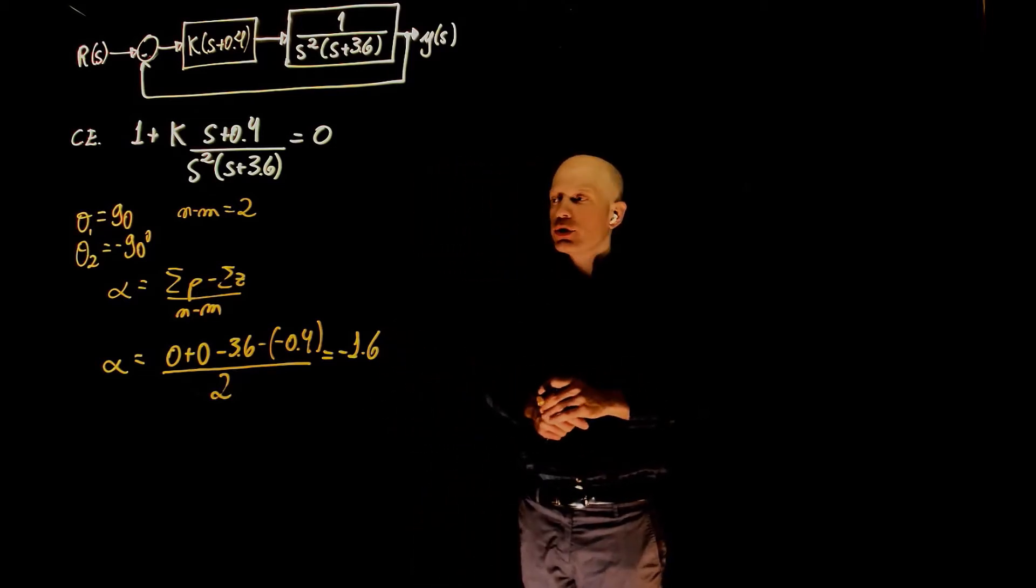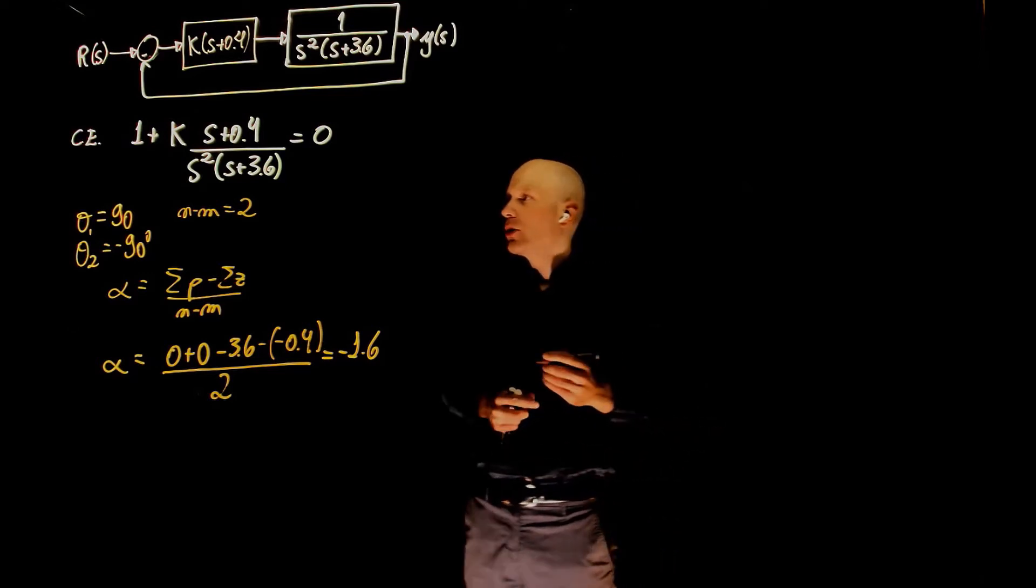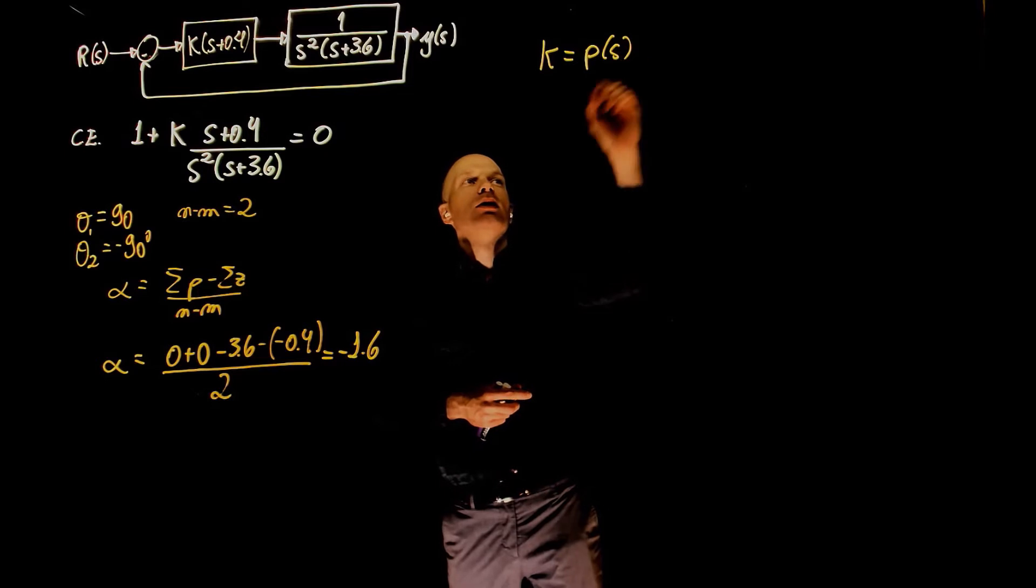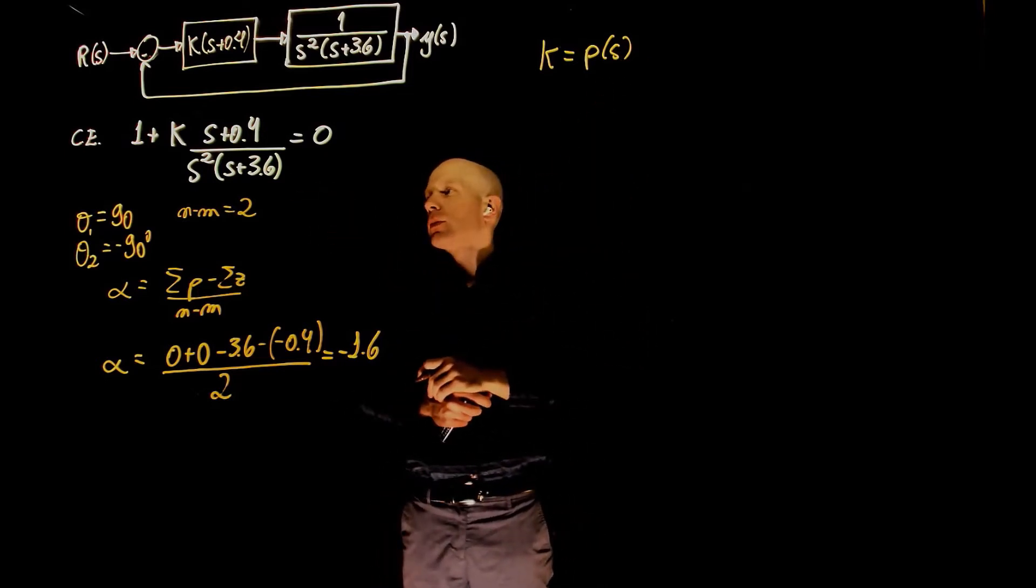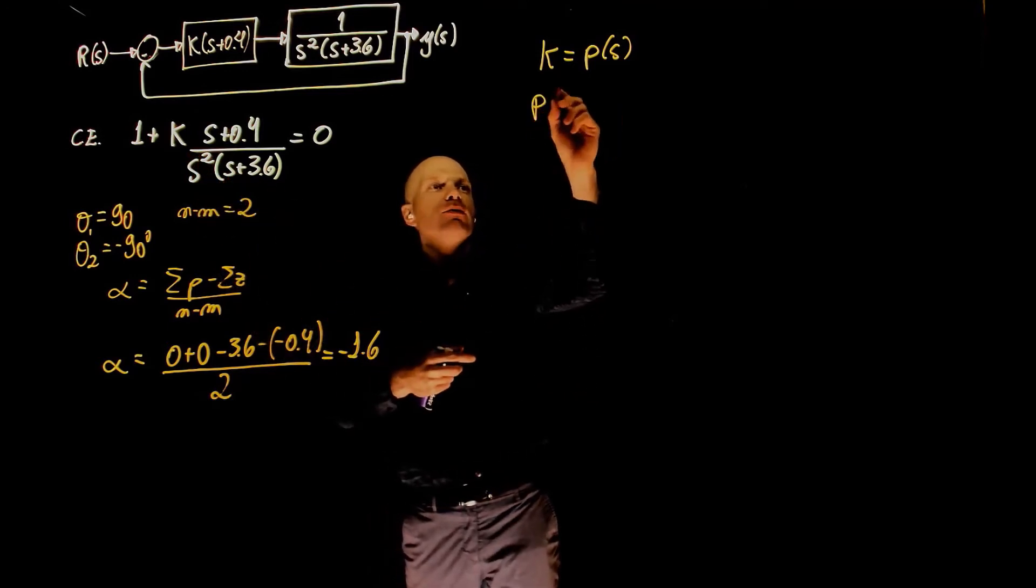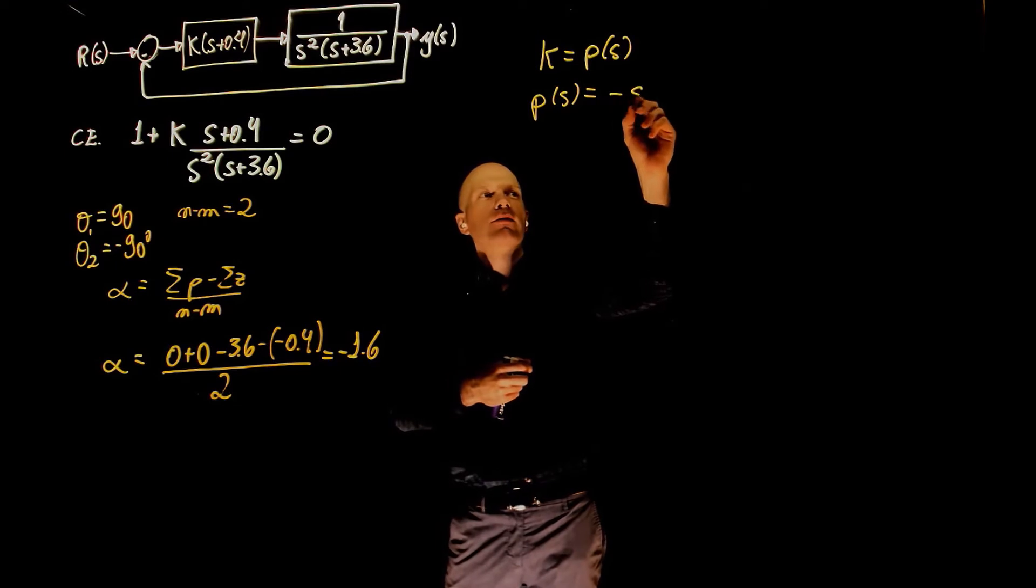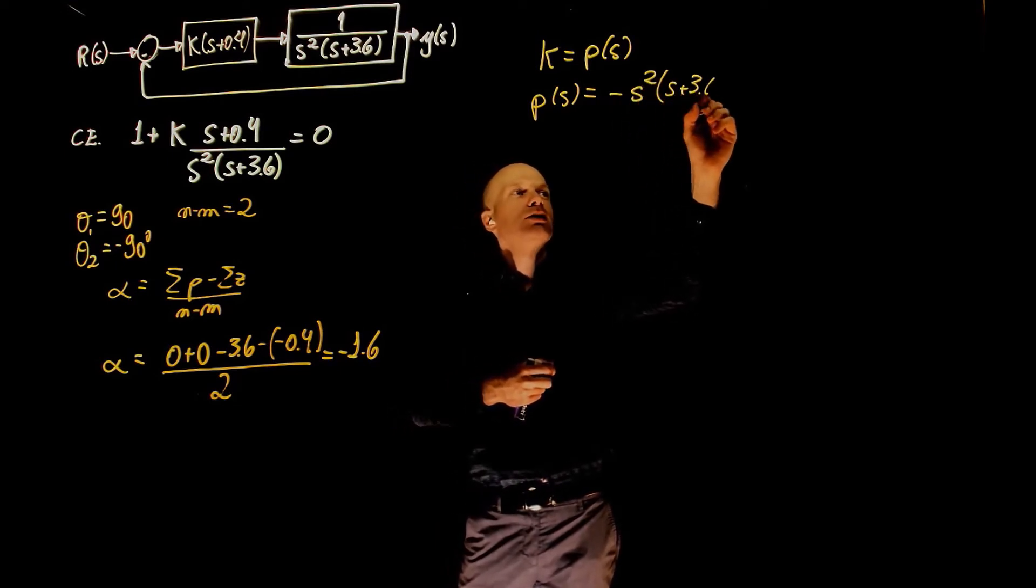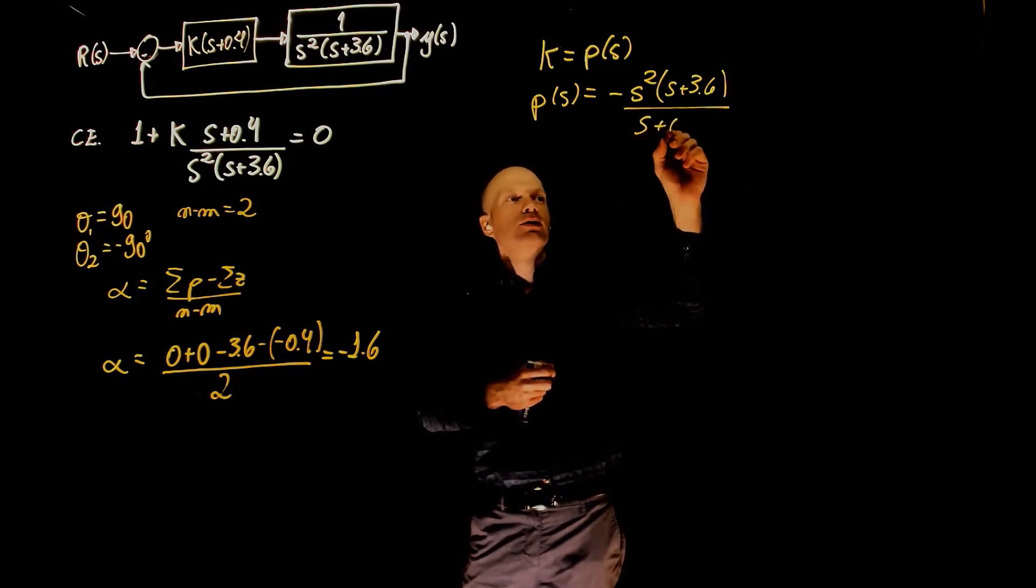Now, let's determine whether or not we have breakaway or break-in points. To calculate the breakaway or break-in points, we are going to set k to p of s and isolate for p of s in the characteristic equation. So, if you replace k with p of s and solve for p of s, we have p of s equals to negative s squared times s plus 3.6 divided by s plus 0.4.